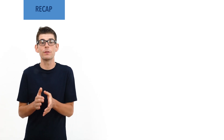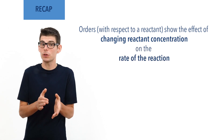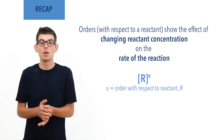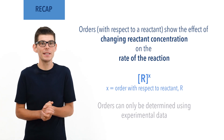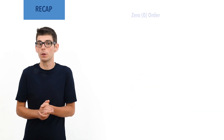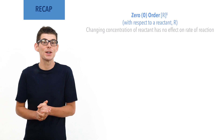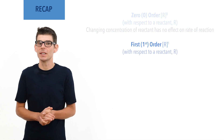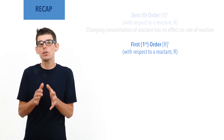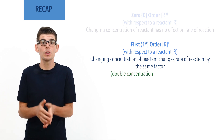Orders of reaction with respect to a particular reagent show the mathematical effect of changing concentration on the rate of reaction. They are written as a small number as a superscript to the reagent in square brackets, representing concentration. Orders of reaction can only be determined using experimental data. If a reaction is zero order with respect to a particular reactant, changing the concentration of the reactant has no impact on the rate of the reaction. If the reaction is first order with respect to a particular reactant, changing the concentration of the reactant will change the rate of the reaction by the same factor — for example, doubling the concentration will double the rate.